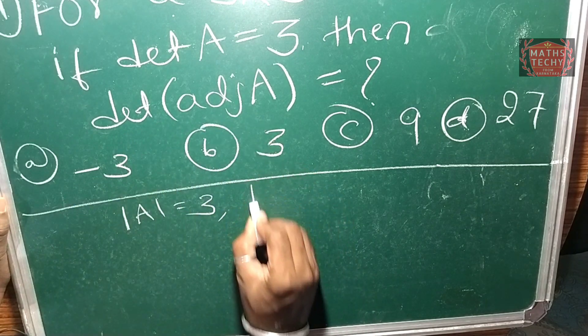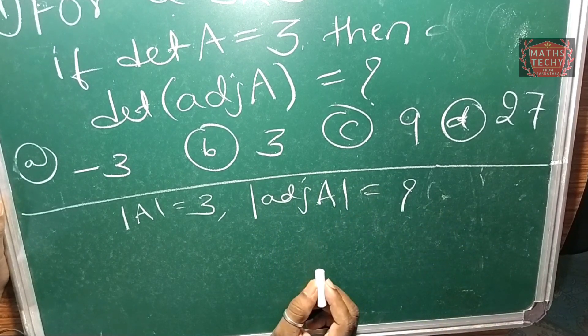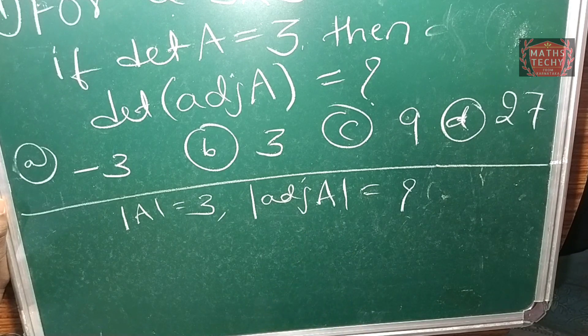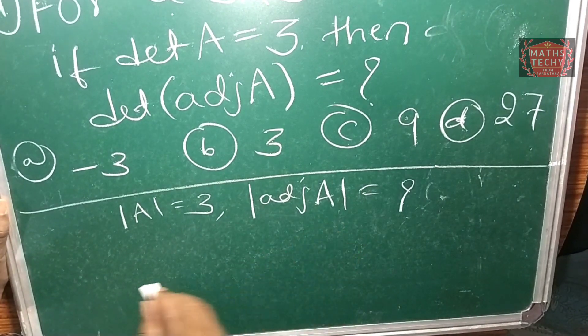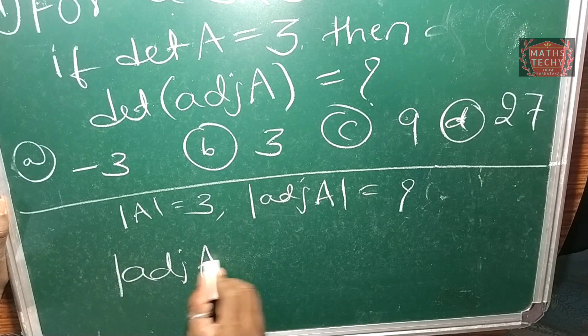To find the determinant of adjoint A, there's a simple trick. Instead of solving from first principles, we can use a shortcut trick to simplify and find the determinant of adjoint A.